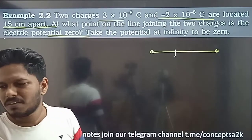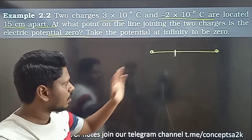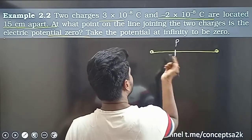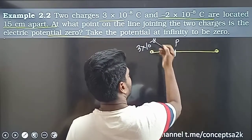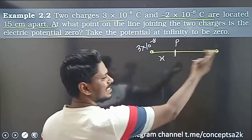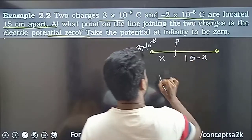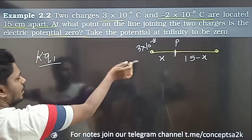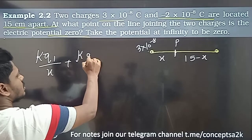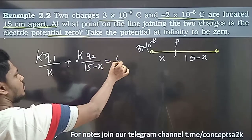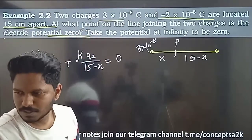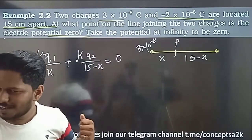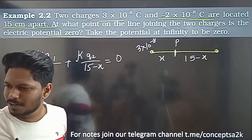The point where the potential is zero — let's call it P. The distance from the first charge is x, and from the second charge is 15 minus x. The total distance is 15 cm. If you have a negative value for the second charge, the potential sum must equal zero. If the potential is zero, the two contributions must be equal and opposite.